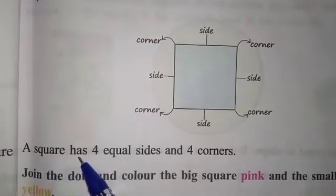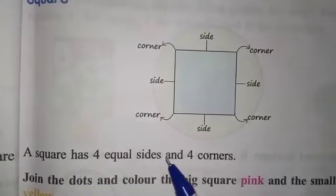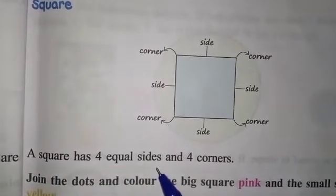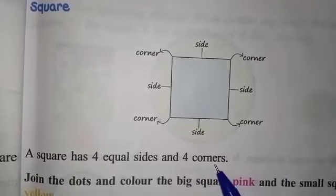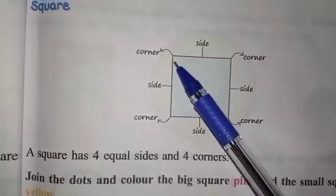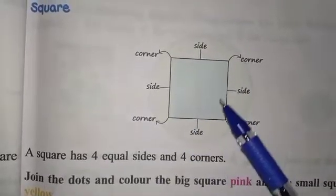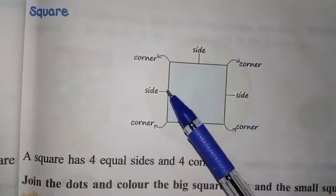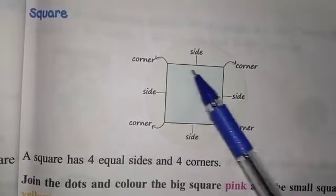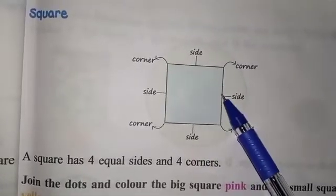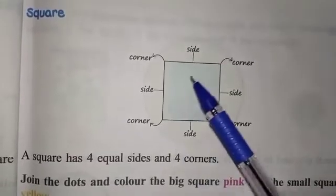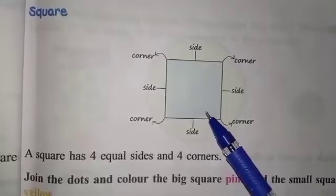A square has four equal sides and four corners. Look at the picture. Corner 1, corner 2, corner 3 and corner 4. And the sides: side 1, side 2, side 3 and side 4. When you look at the sides, all four sides are equal in length — this side is equal to this side, and again equal to this side, and equal to the fourth side also.